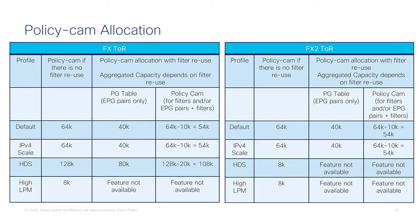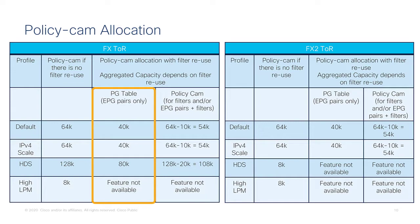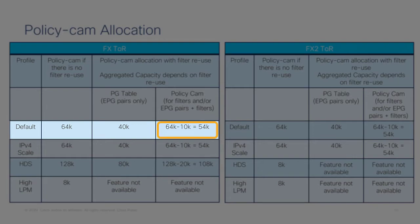Now let's look at how hardware is allocated when enabling compression with contract reuse. On the left you can see the hardware profiles. Without filter reuse, the policy cam has 64k entries allocated for the default profile, for the IPv4 scale, the high dual stack profile, and the high LPM profile. But if at least one contract is reused between EPG pairs, ACI allocates a policy group table for 40k EPG pairs. Those entries point to the policy cam for filter storage, so the policy cam becomes 54k instead of 64k — the 10k difference is consumed by the policy group table.